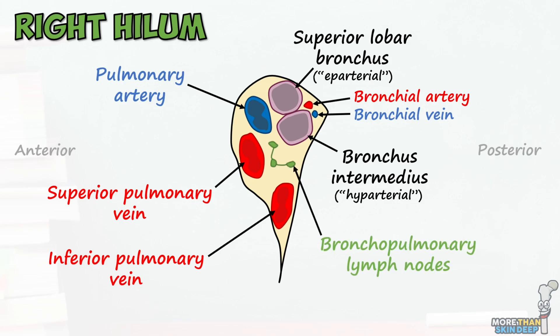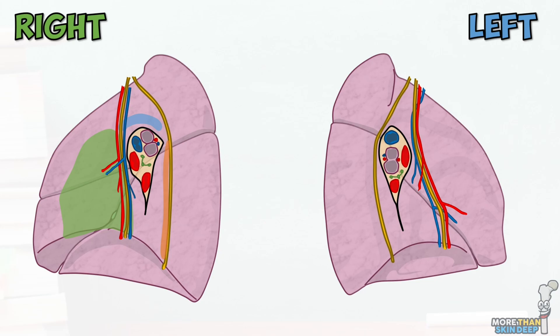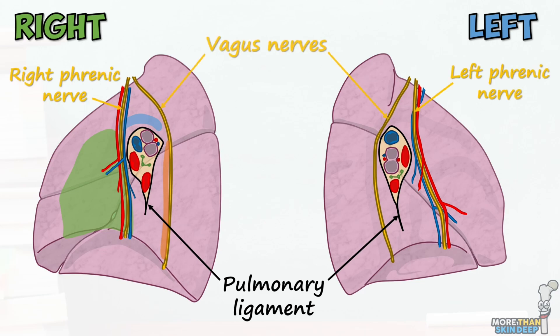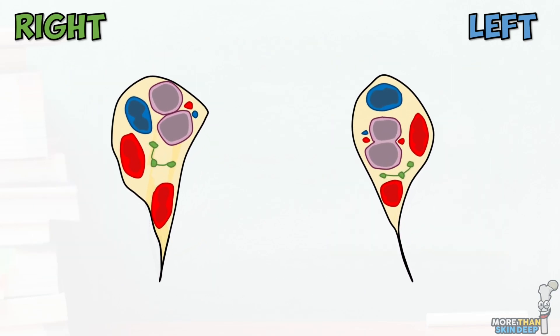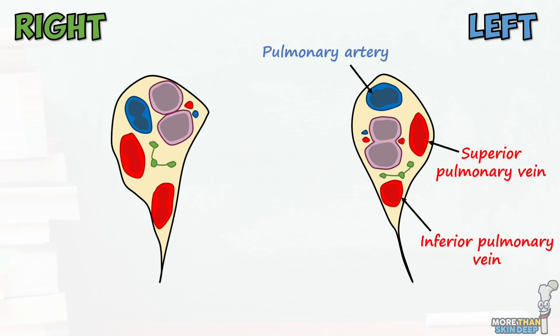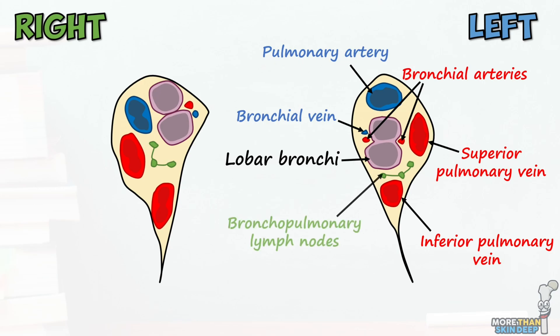Lastly, there are some small and inconsistent bronchopulmonary lymph nodes that lie within the hilum. Now let's put that side by side with the left lung hilum. We can see that the structure of the left hilum is broadly similar, with the pulmonary ligament, the phrenic and vagus nerves, and the cardiac impression. Additionally, we see this deep groove for the arch of the aorta, which runs down the left side of the mediastinum. Just like the right hilum, in the left we see two pulmonary veins — one inferior and one superior — the pulmonary artery which lies superiorly, and the superior and inferior lobar bronchi as they branch off the left main bronchus. On the left side we typically have two bronchial arteries and one bronchial vein, and lastly the bronchopulmonary lymph nodes.